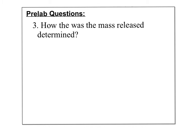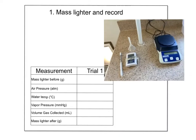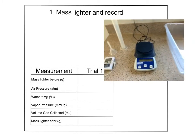In pre-lab question one, we were told 1.613 grams of gas was released. How do we actually determine that value? We mass the lighter before, minus the mass of the lighter after. That difference — the mass should decrease because we're releasing gas — gives us the mass of the gas, which becomes the grams in our grams-over-moles calculation.